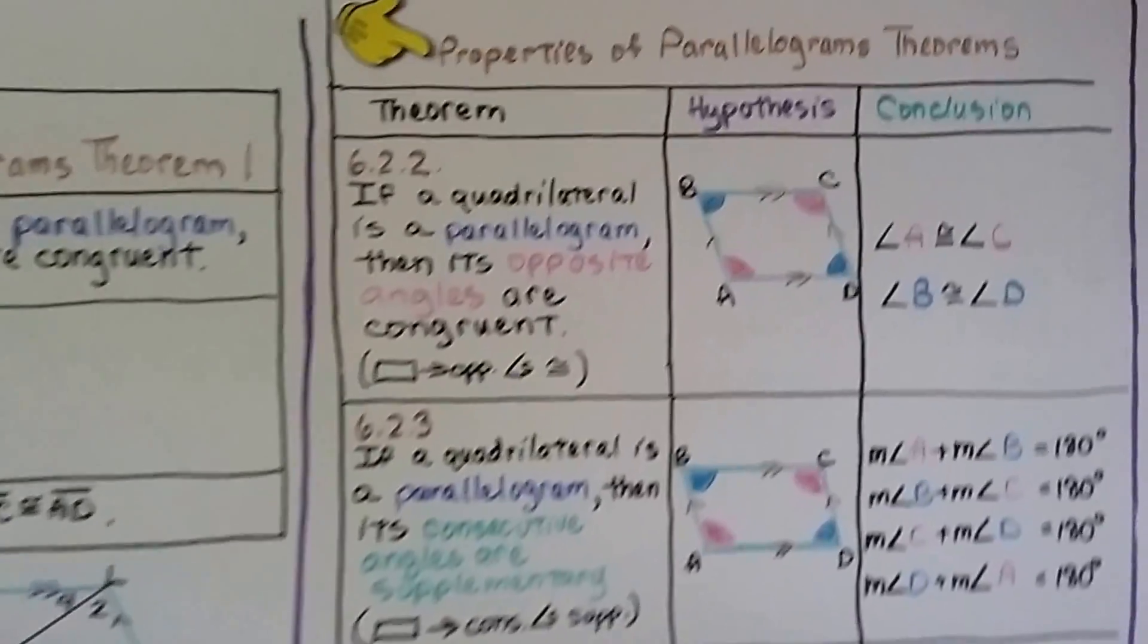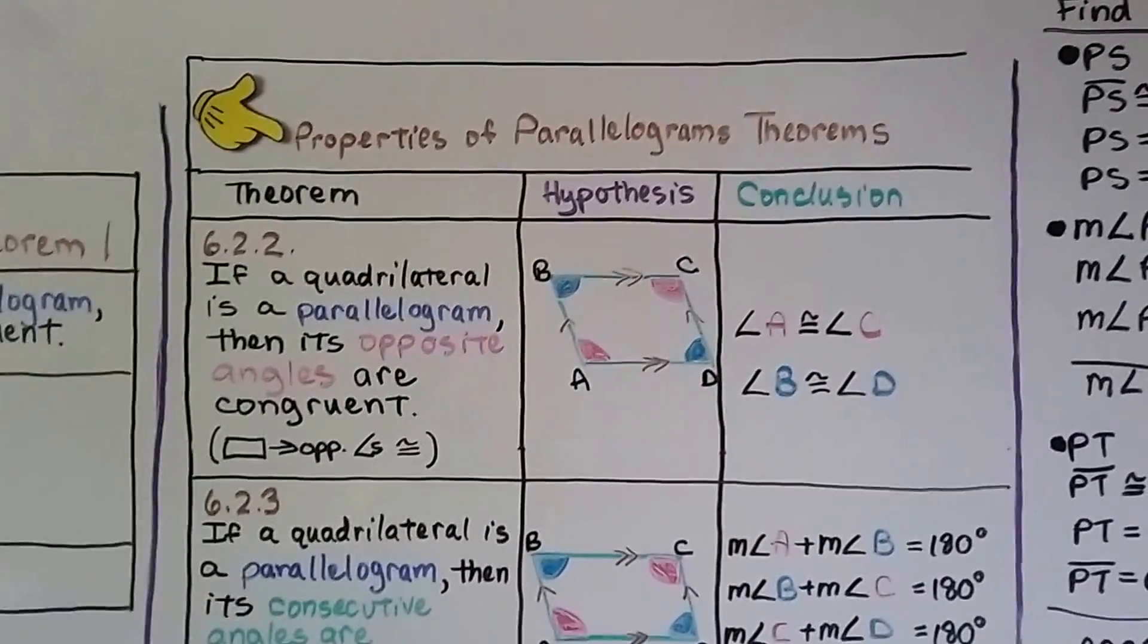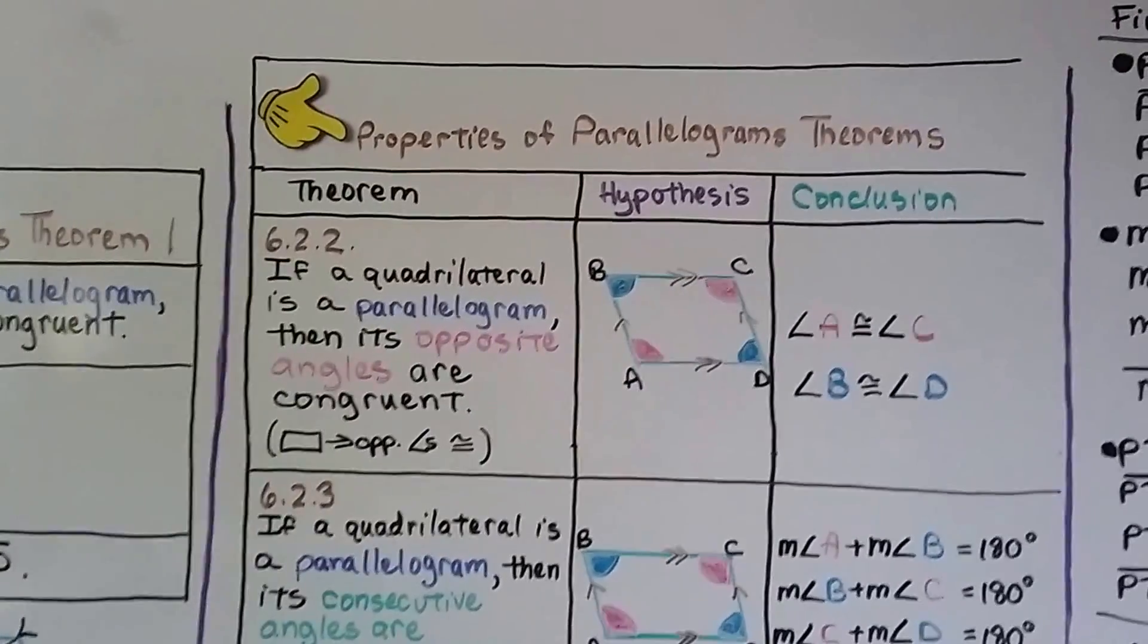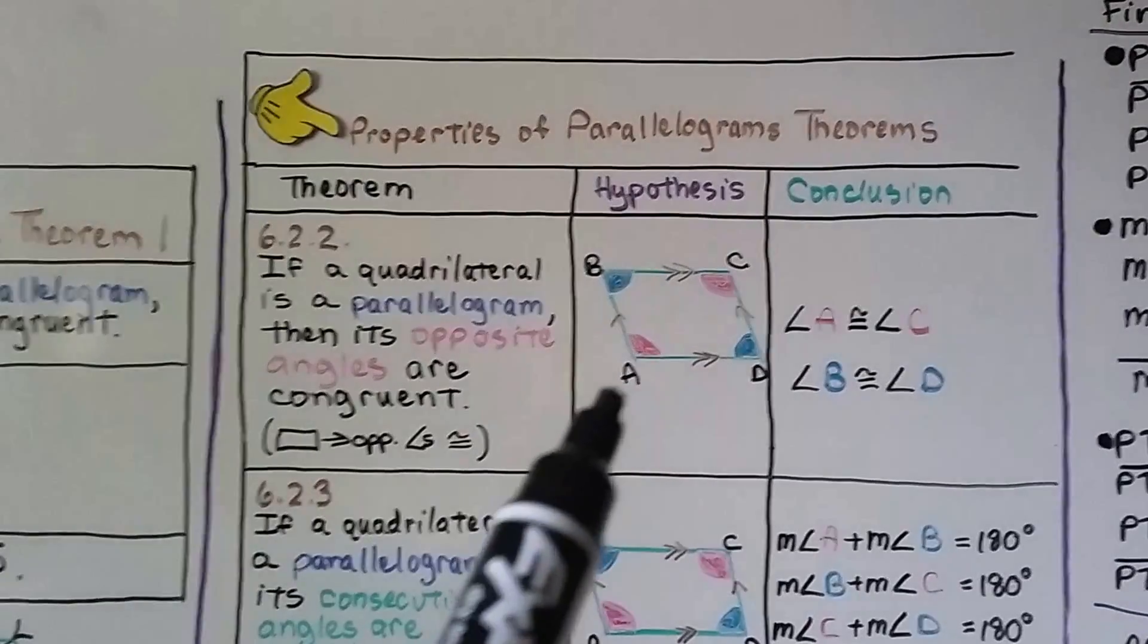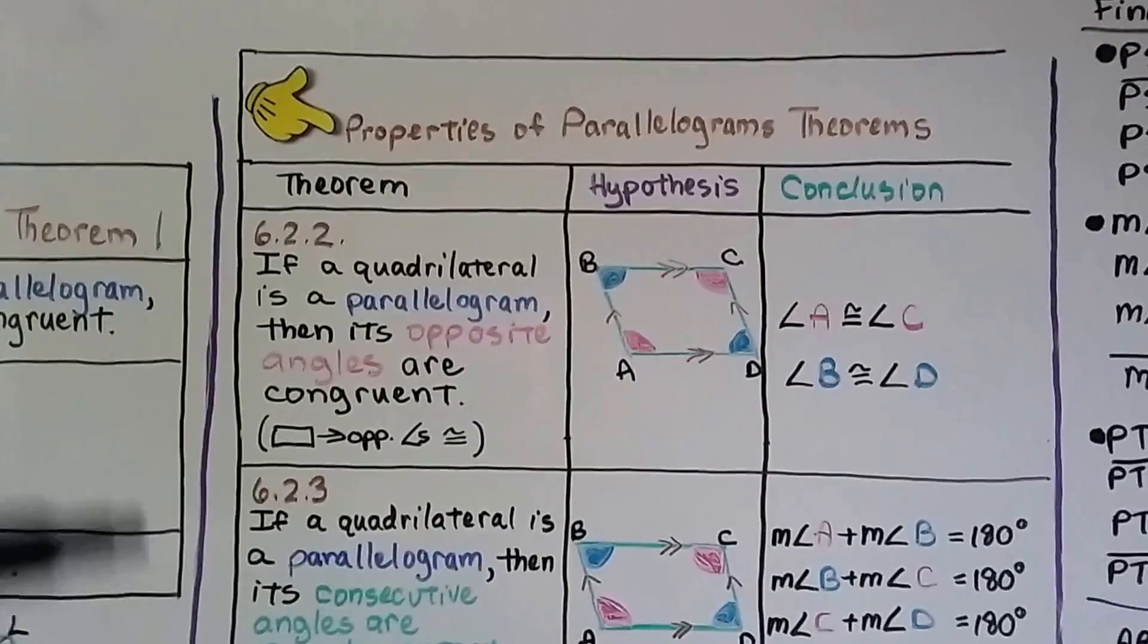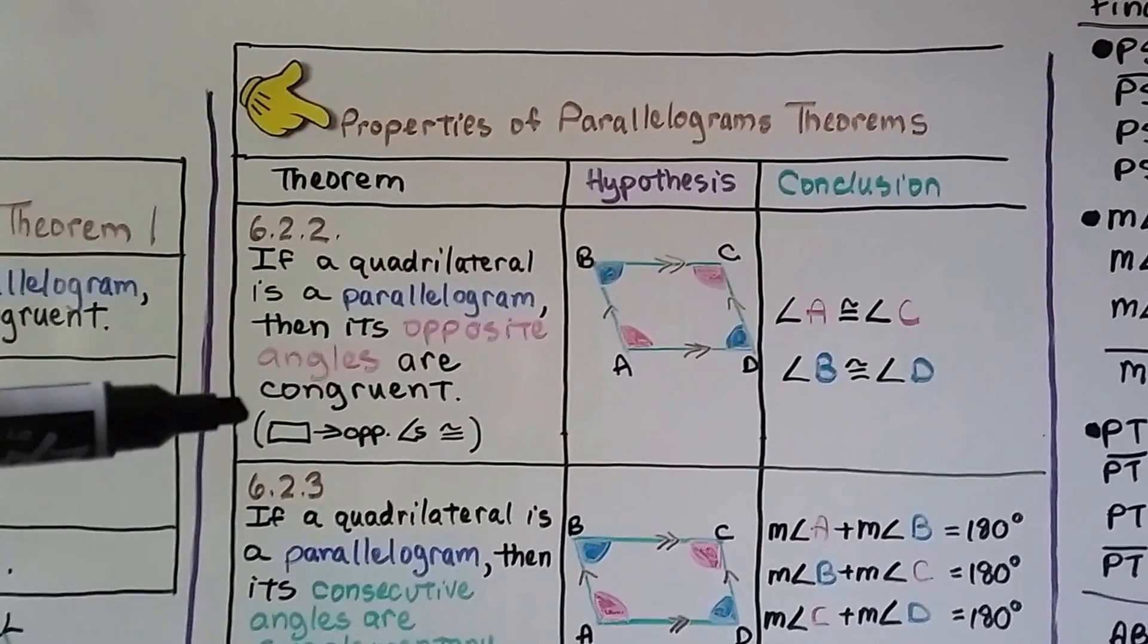Here's our next theorem. It says if a quadrilateral is a parallelogram, then its opposite angles are congruent. This one said the opposite sides are congruent. Now number two says the opposite angles are congruent. So angle A will be congruent to angle C, and angle B will be congruent to angle D. And we can write geometric notation like this to say its opposite angles will be congruent.